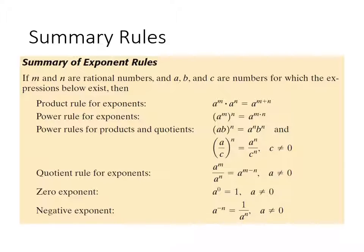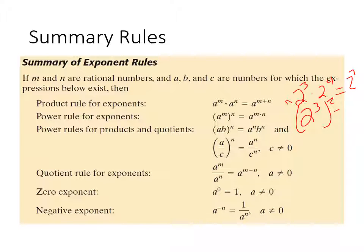So the example is: two to the third times two to the fourth equals two to the seventh. The power rule for exponents says if you have a variable to a power and then raise it to another power — parentheses are the key — you multiply the exponents together. So two to the third, squared, means two times three, which gives two to the sixth.